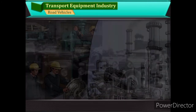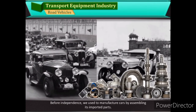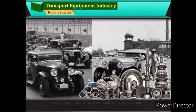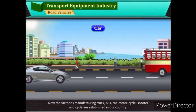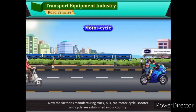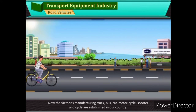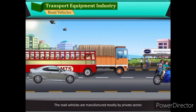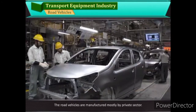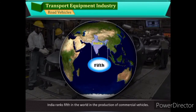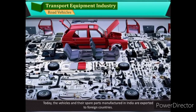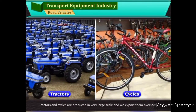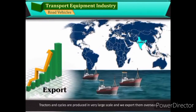Road Vehicles: Before independence, India used to manufacture cars by assembling imported parts. Now, factories manufacturing trucks, buses, cars, motorcycles, scooters, and cycles are established in our country. Road vehicles are manufactured mostly by the private sector. India ranks fifth in the world in the production of commercial vehicles. Today, vehicles and their spare parts manufactured in India are exported to foreign countries. Tractors and cycles are produced in very large scale and exported overseas.